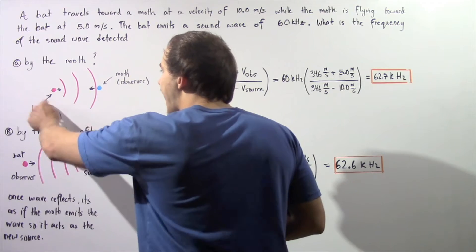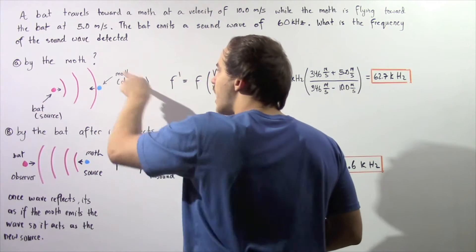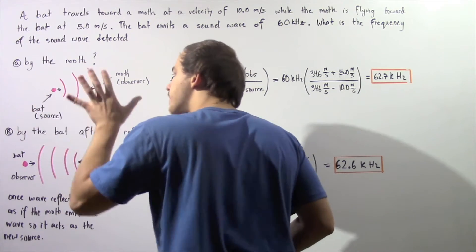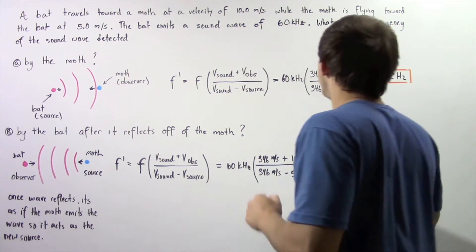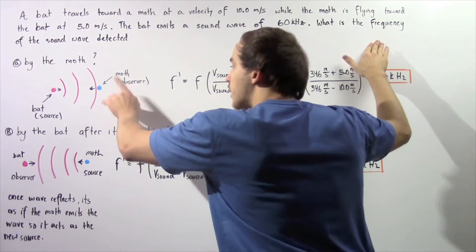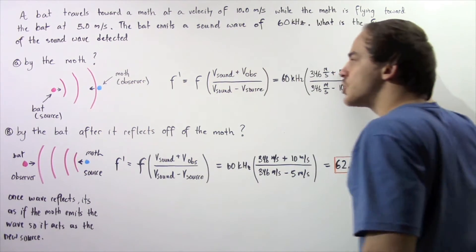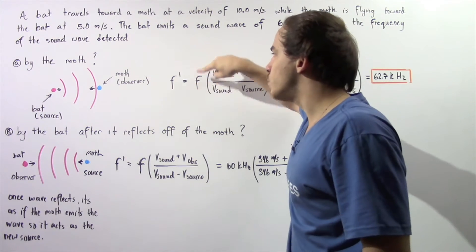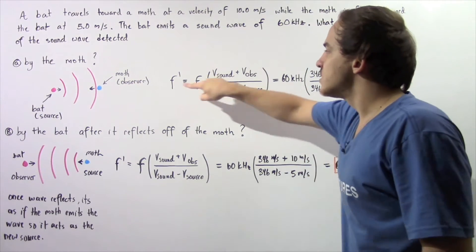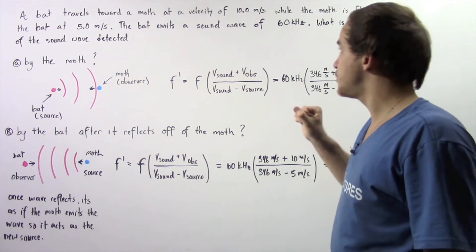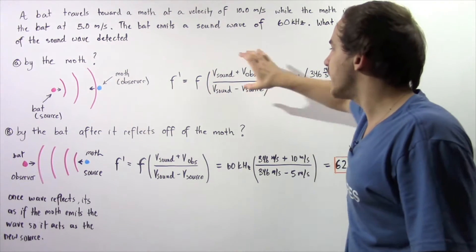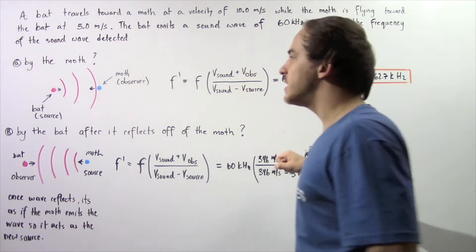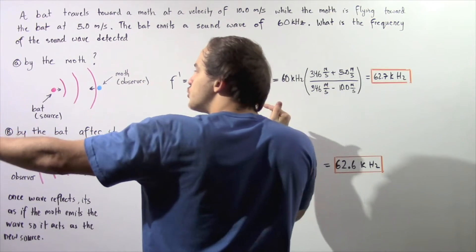In part A, our bat is traveling towards the moth and our moth is traveling towards the bat. We treat the bat as the source because the bat creates the sound wave, and since we want to calculate the frequency that the moth observes, we treat the moth as the observer. We use the Doppler equation to calculate the perceived frequency observed by the moth: F' equals F multiplied by a ratio, where the numerator is positive and the denominator is negative because these two objects are traveling towards one another.